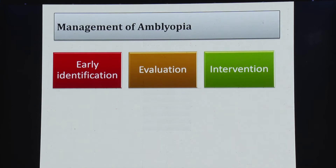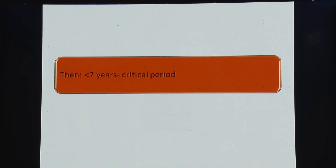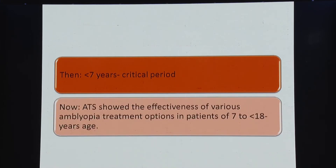In management of amblyopia, early identification, proper evaluation, and appropriate intervention still remain the key. What has changed is the concept of cortical plasticity. Earlier we used to believe that cortical plasticity is over by age 7 to 8 years, but nowadays we have started believing that it still exists even in older age. Even if we treat patients who are more than 7 years — sometimes as old as 20 years — there is a possibility that we may be able to restore vision. This concept of plasticity has changed, and we now treat patients as and when they come, especially anisometropic amblyopia, which has shown good results in older age groups.